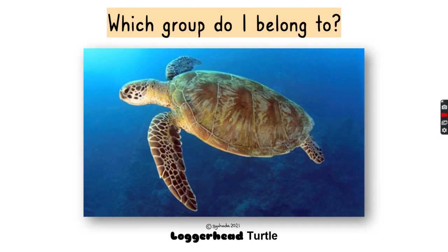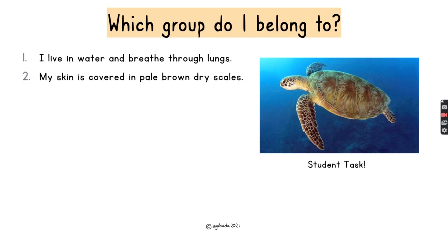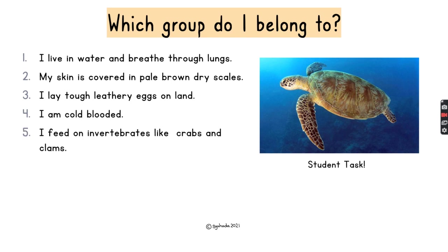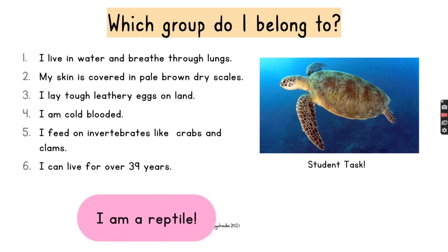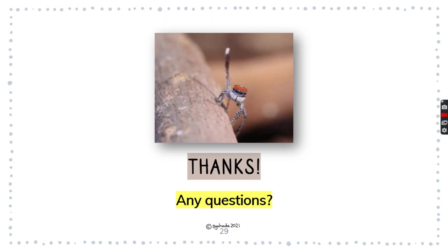Next up: the loggerhead turtle. Which group does this belong to? Its features: mostly lives in water, breathes through lungs, skin covered in pale brown dry scales, lays tough leathery eggs on land, cold-blooded, and feeds on invertebrates like crabs and clams, living for over 39 years. The answer is reptile. Write down which features from the passage make it a reptile — it should be features one through four.